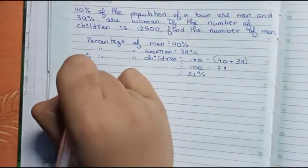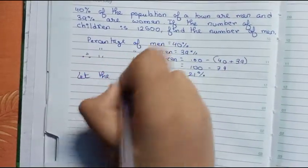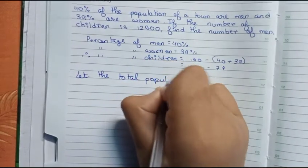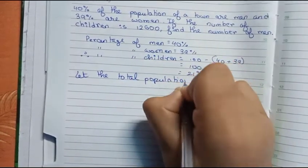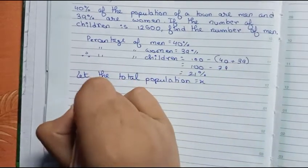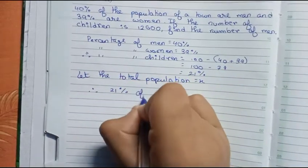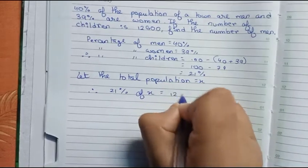So now I write, let the total population equals to x. So therefore you can write 21% of x equals to 12600.